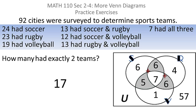And if you add up six, six, and five, you get 17. So 17 cities had exactly two teams.